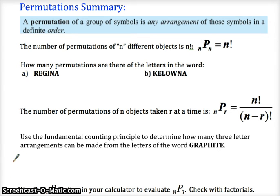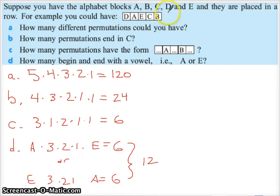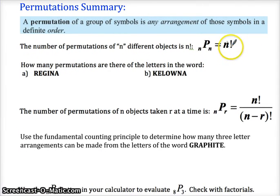Summary on permutations. A permutation is a group of symbols in any arrangement of those symbols in a definite order. In other words, the order matters. Here's the symbol for permutation. It means we're going to take, if we do the number of permutations of n different objects, it's n factorial. So we want to use all the things in a set. Like back here, we took all five of these blocks and we're going to arrange all five of the blocks. It's going to be five factorial, which is what we just saw there. One way to write that is n factorial. Another way is nPn, and I will describe that in video part two.